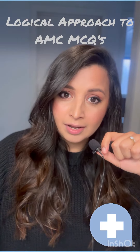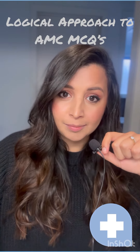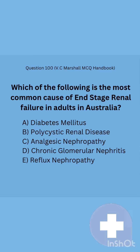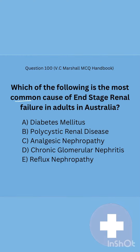I'm going to show you how to approach any AMC MCQ question using logic, straight from the MCQ handbook. The question already gives us so many hints — it needs to be the most common or most important cause. 'End stage' tells us the condition needs to be chronic, progressing over a long time. With the standard of healthcare in Australia, this will allow you to rule out a few options.